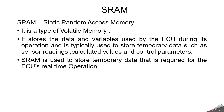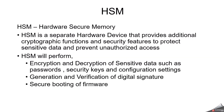SRAM is static random access memory. It is a type of volatile memory that stores the data and variables used by the ECU during its operation, typically used to store temporary data such as sensor readings, calculated values and control parameters. SRAM is used to store temporary data required for the ECU's real-time operation. SRAM also relates to hardware secure memory — you may have heard about the HSM inside the ECU. It is a separate hardware device that provides additional cryptographic functions and security features to protect sensitive data and prevent unauthorized access, with critical and sensitive data stored inside the HSM.